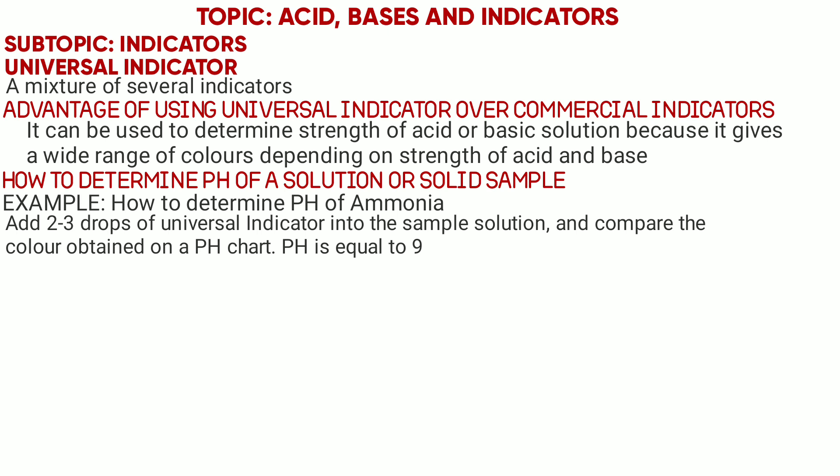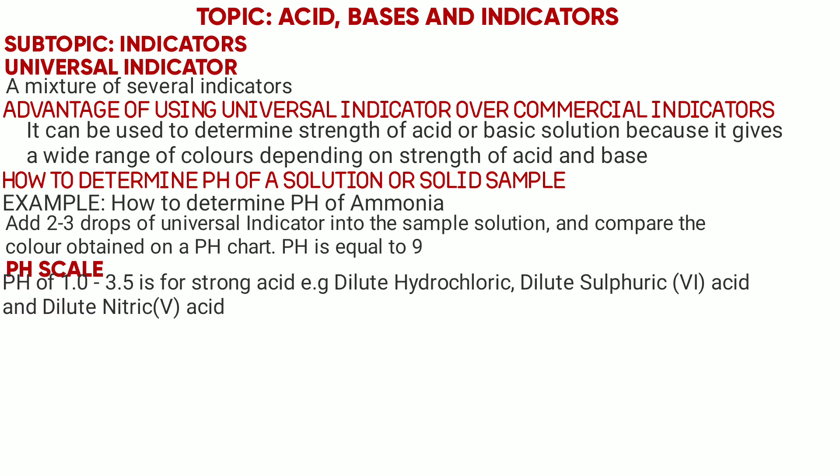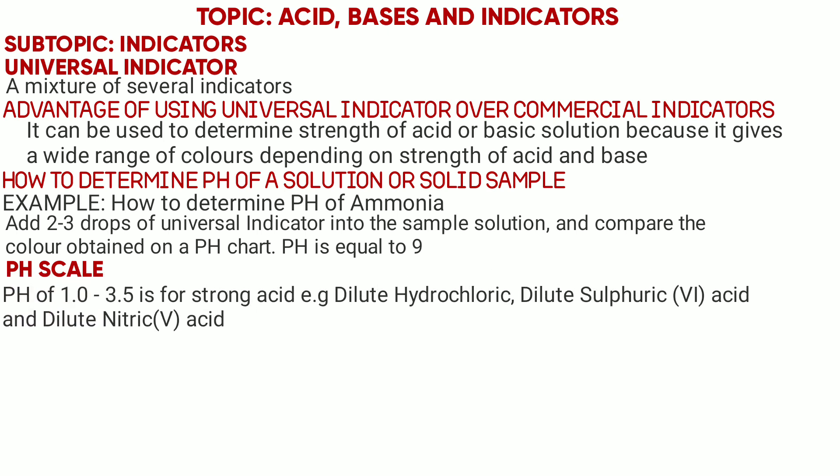Next we have the pH scale. A pH scale has numbers ranging from 1 to 14, and each of the numbers has a color. When adding Universal Indicator into a solution, you will be required to compare the color obtained on the pH scale. pH 1.0 to 3.5 is for strong acids, which include dilute sulfuric acid, dilute hydrochloric acid, and dilute nitric acid.